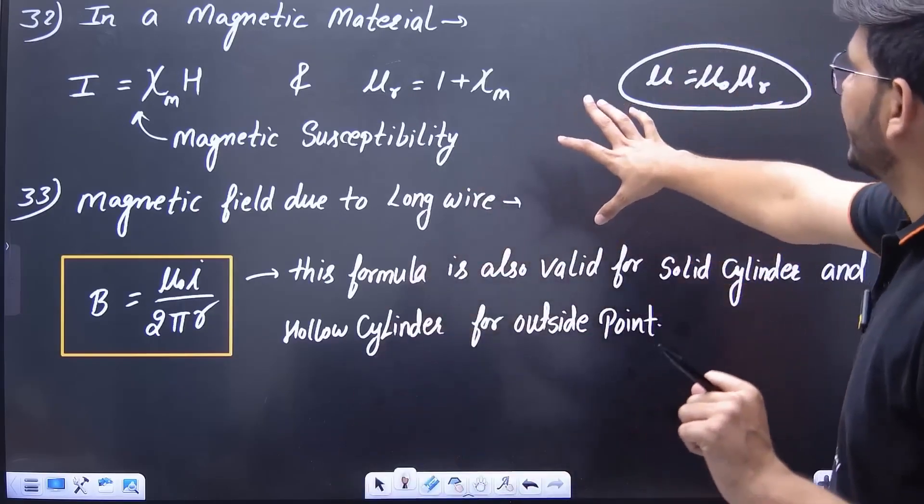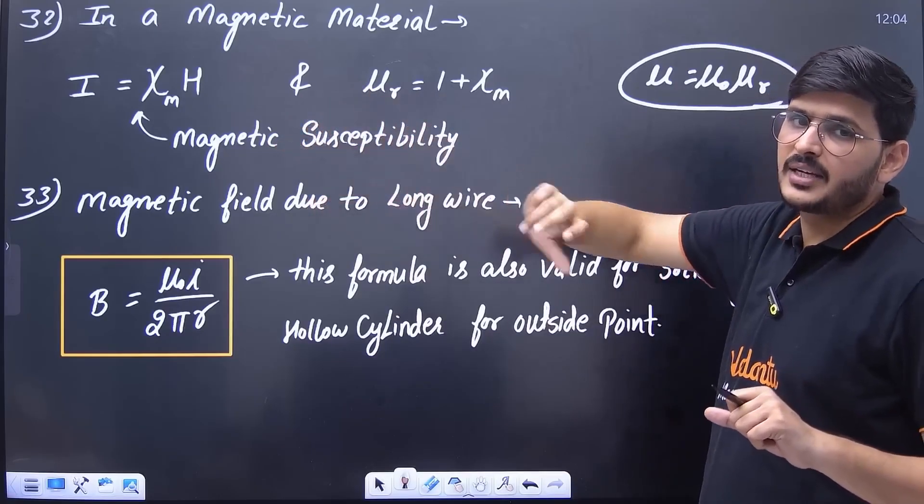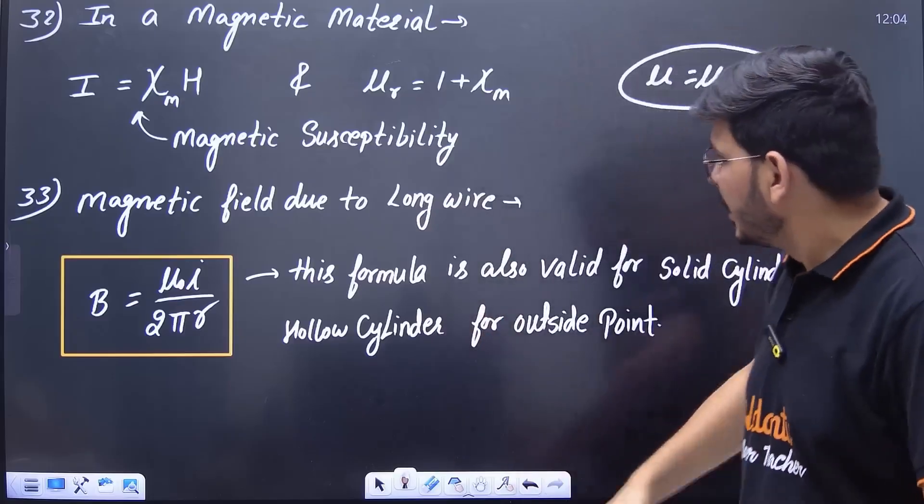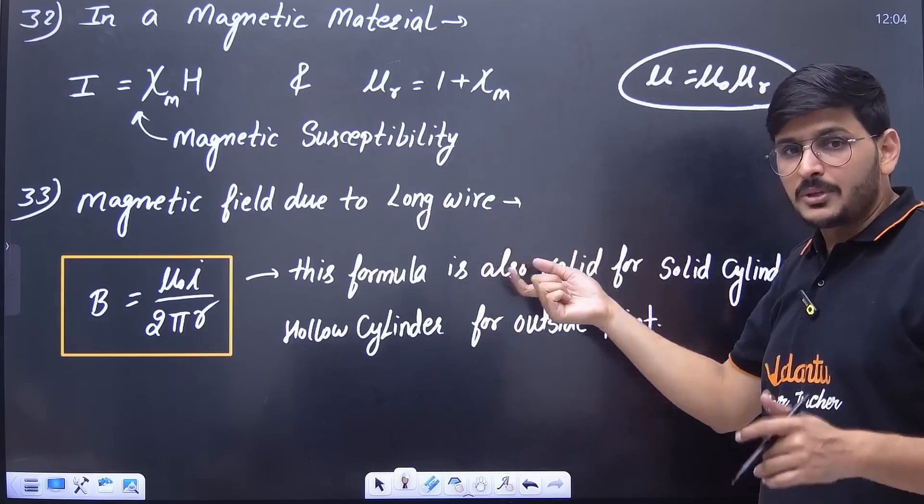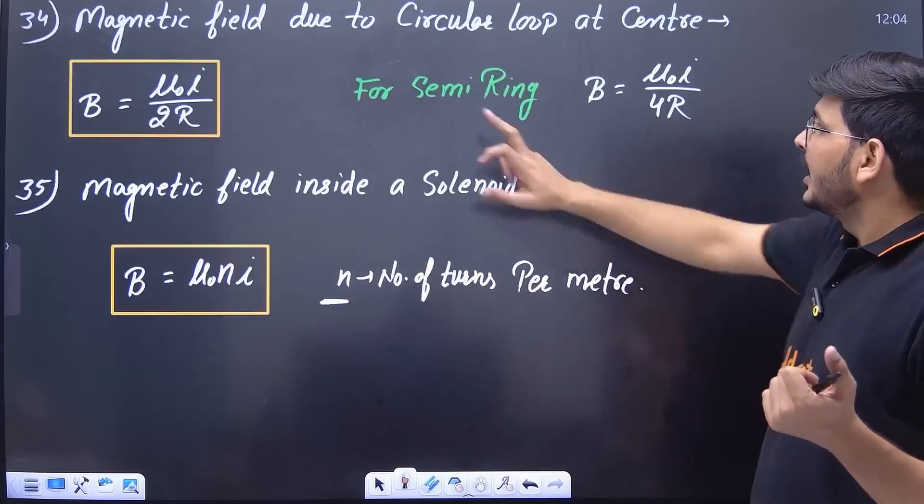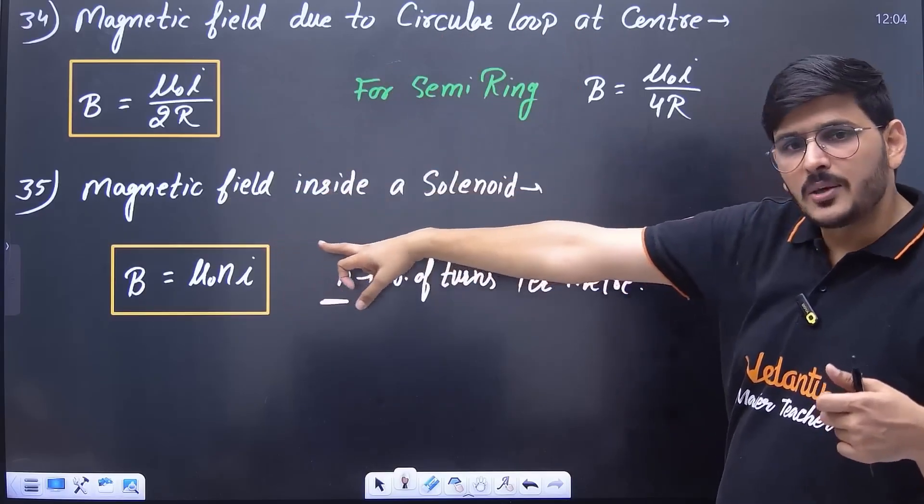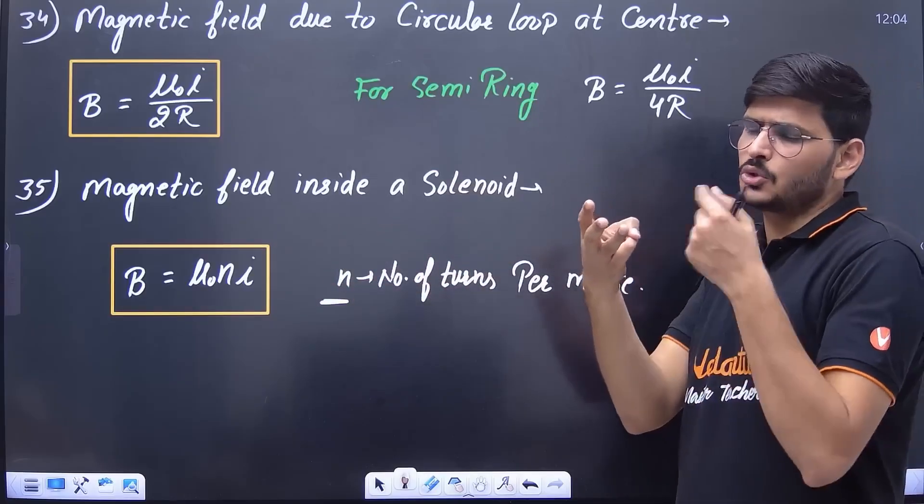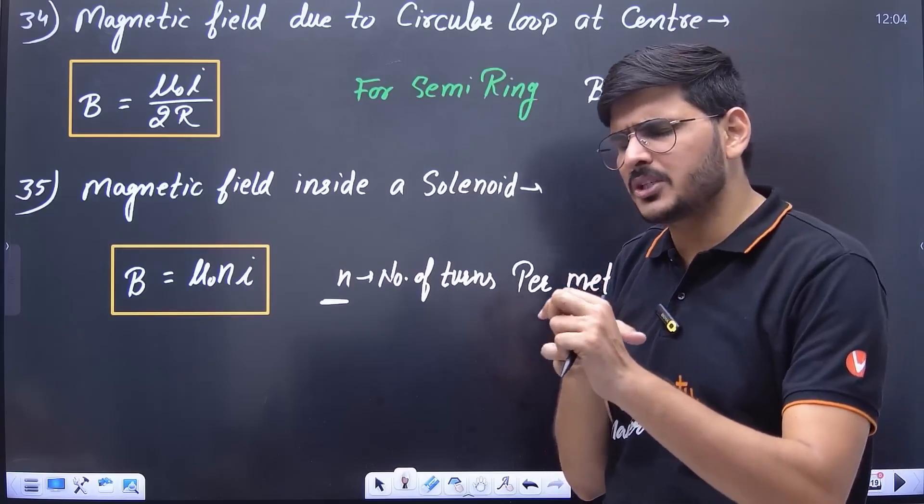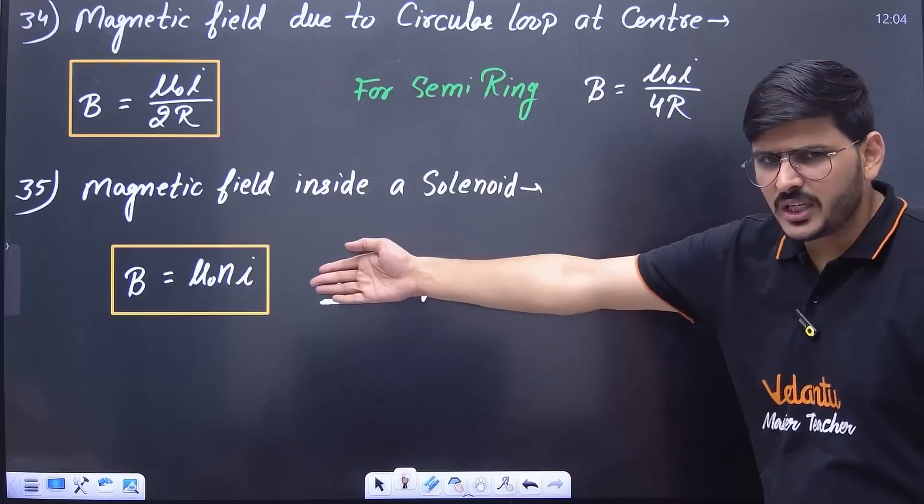Similarly, look at the formula of magnetic material. This χ equals μr is very important. μr is the magnetic susceptibility. The higher the μr, the more magnetic properties it will have. Magnetic field due to long wire. Now see which are the important formulas of magnetic field. One is the magnetic field due to long wire and the other is magnetic field due to circular loop. Circular loop was asked in NEET 2024. Many times it was of solenoid. See, one of these three formulas will be asked: either of solenoid or circular loop or of straight wire. Direct formula based question will come. Nothing has to be done. Direct formula has to be applied. This has been asked 3-4 times.